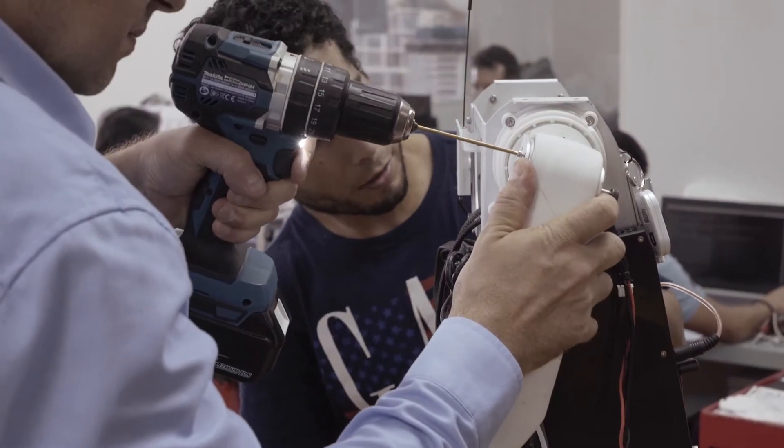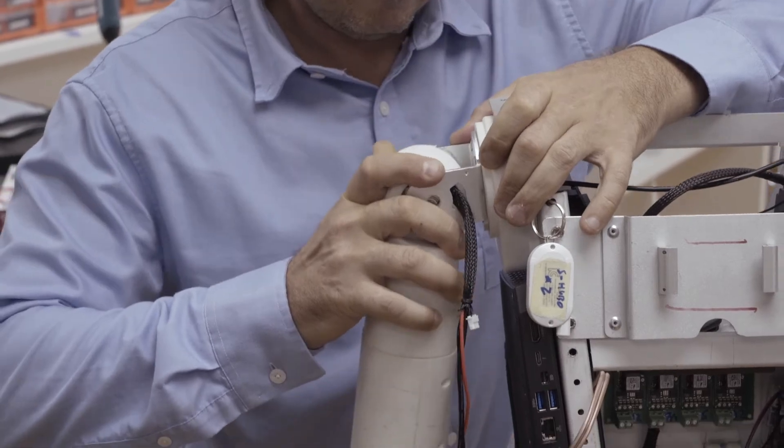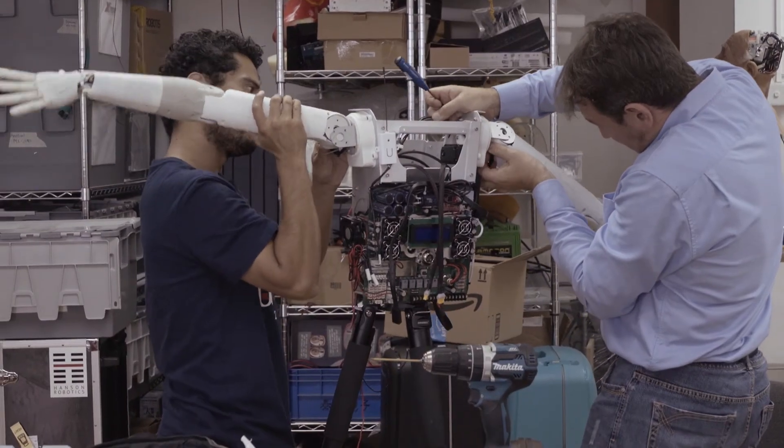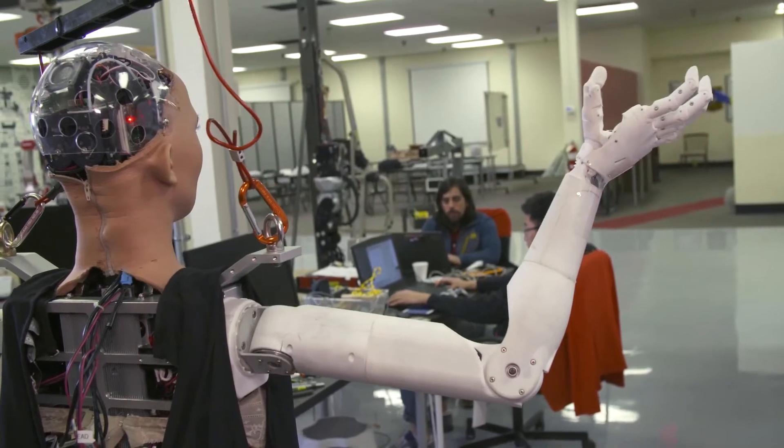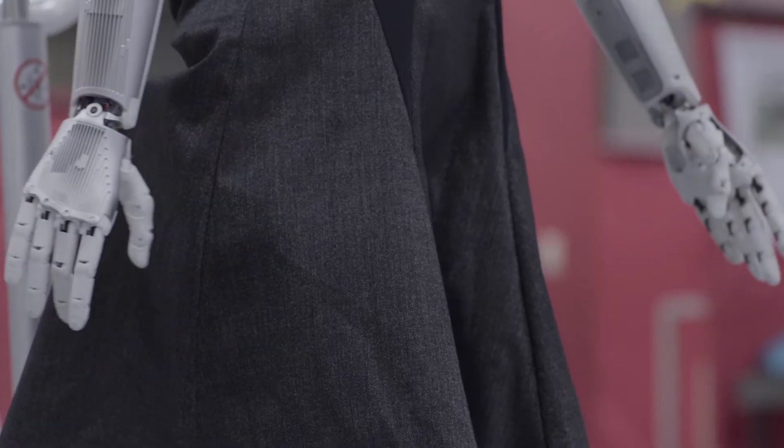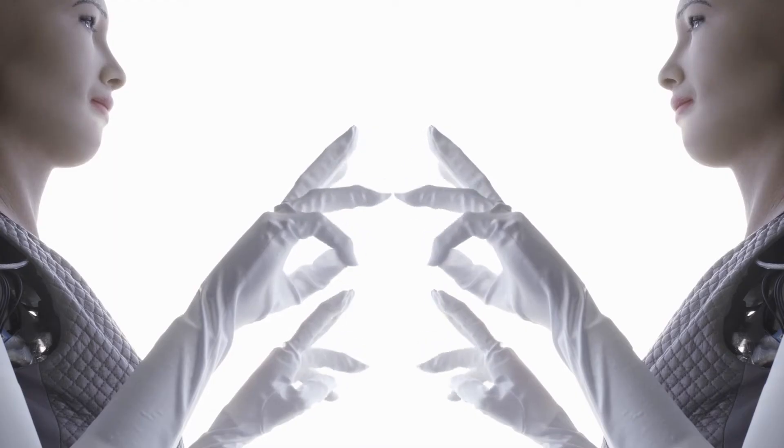Once this lengthy planning process is complete, the team assembles the newly manufactured parts and rigorously tests them for reliability and accuracy. All of this careful planning and testing is the key to making Sophia's movements so smooth and natural.